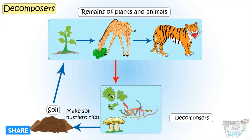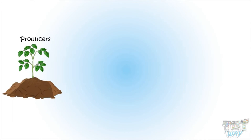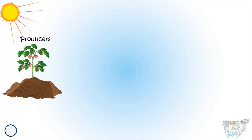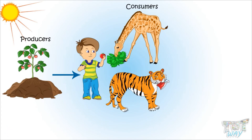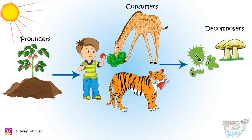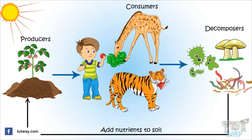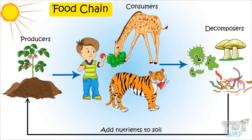It starts with the producers that use the nutrients from the soil and sunlight to produce food. These producers provide food for all the consumers. And all the consumers, when dead, are converted by decomposers into nutrients and added back to the soil. Such flow of energy between producers, consumers, and decomposers is called a food chain. And in a single habitat, there can be one or many food chains.